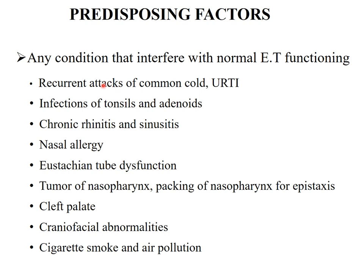Predisposing factors. Any condition that interferes with the normal functioning of the Eustachian tube is a predisposing factor, including recurrent attacks of common cold, upper respiratory tract infection, infection of the tonsils and adenoids, chronic rhinitis, allergic rhinitis, sinusitis, Eustachian tube dysfunction, tumors of the nasopharynx, packing of the nasopharynx or intranasal cavity for epistaxis, cleft palate, craniofacial abnormalities, and cigarette smoke and air pollution.